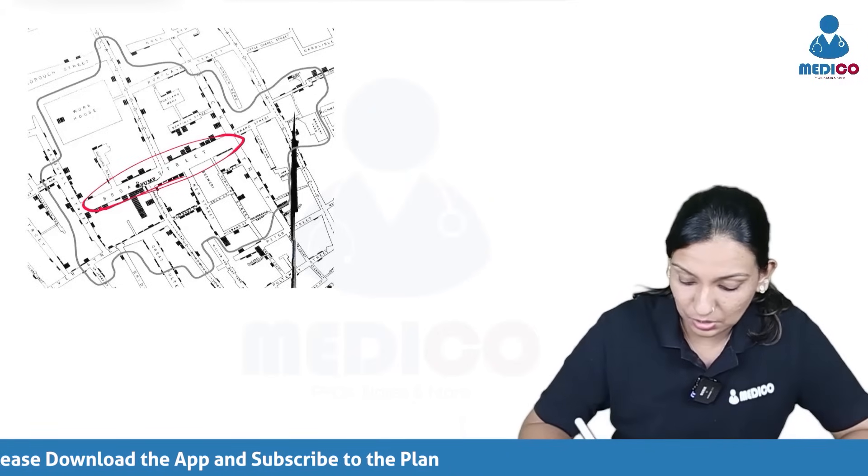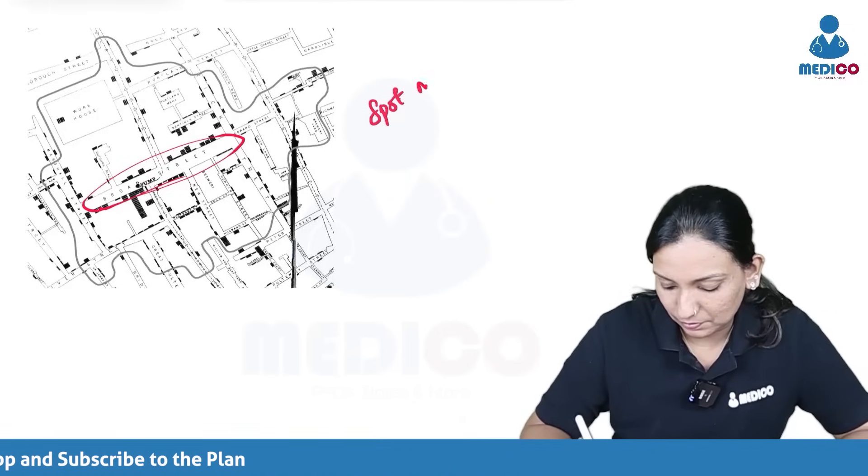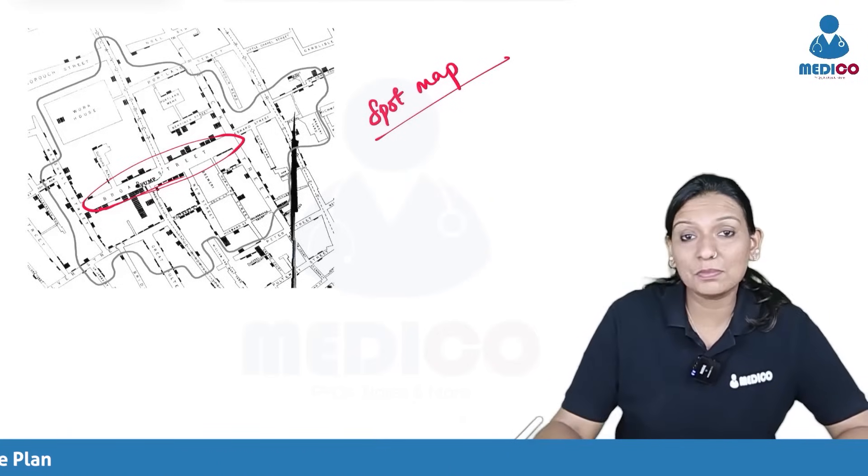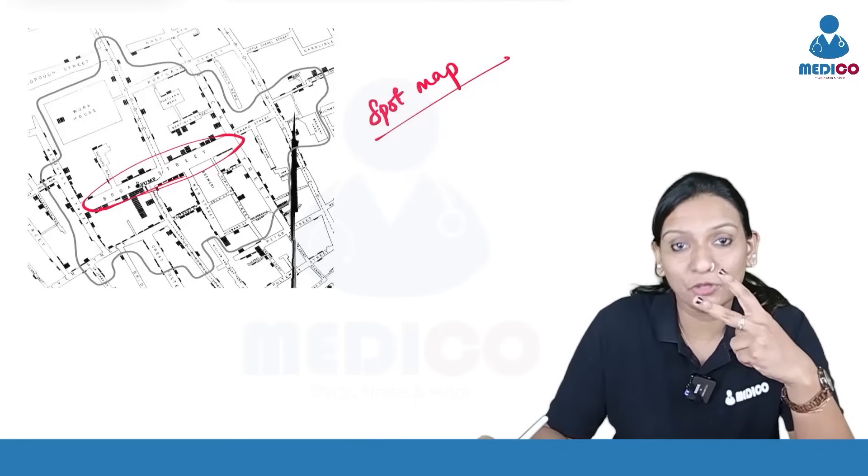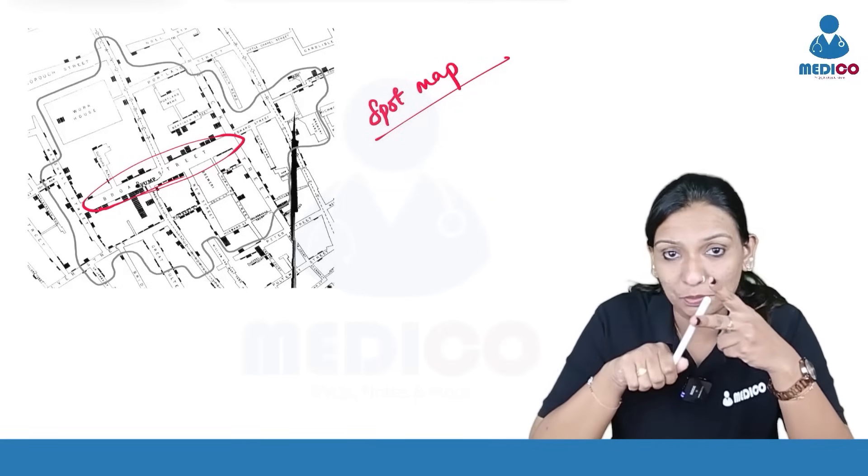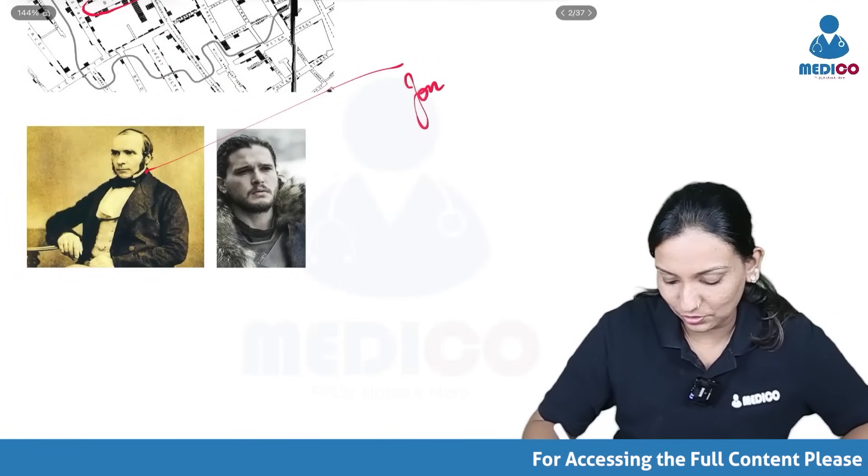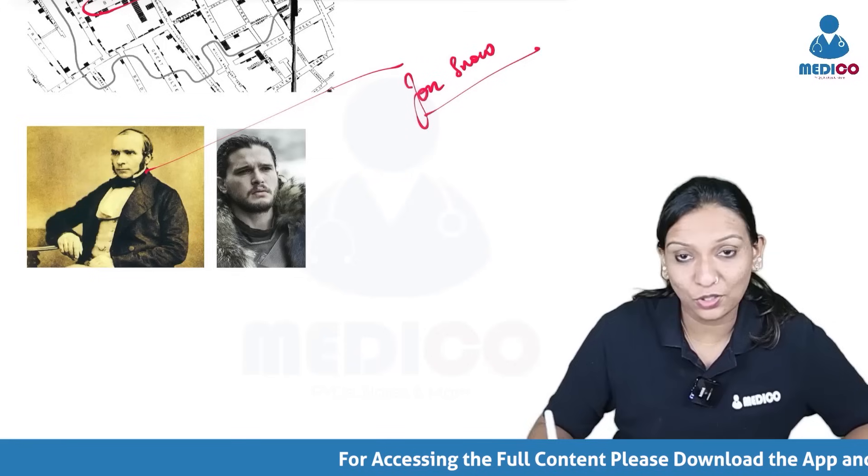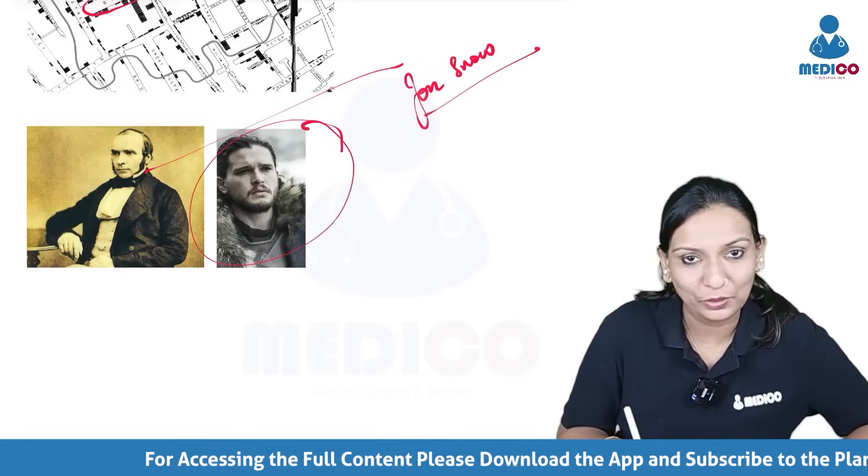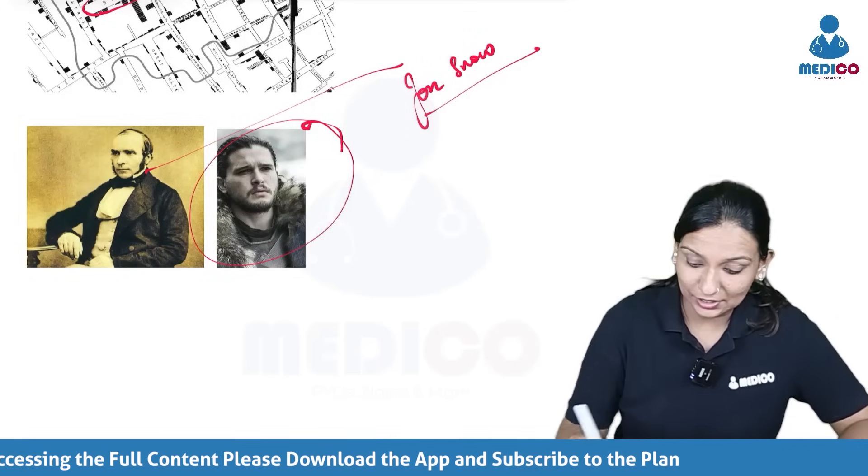This is called a spot map. And when you hear spot map, two things should come to your mind. One disease and the name of one person. Yes, we are talking about Jon Snow. The real Jon Snow we are talking about. This is for you to remember.